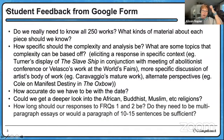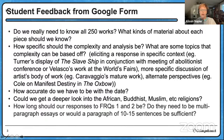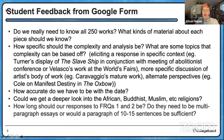I want to address some of the questions coming in the Google form. Do we really need to know all 250 works? Well, they are all part of the required content. I know it's been a wonky year, so if you're finding yourself feeling the pressure of getting all 250 in, I would encourage you to focus on contextual variables and putting them in groups and reviewing them that way. What kinds of material about each piece should we know? Form, function, content, and context — those are always the big variables that we talk about with works of art in the image set.